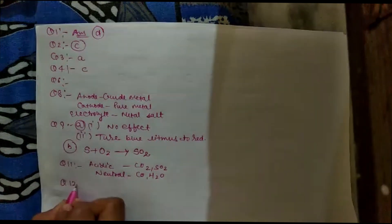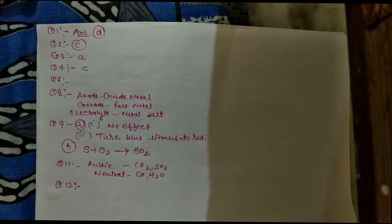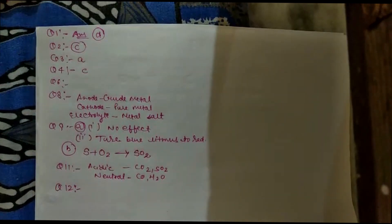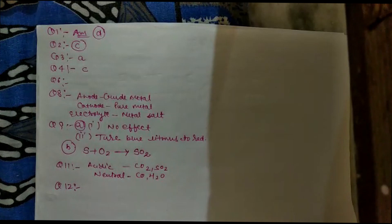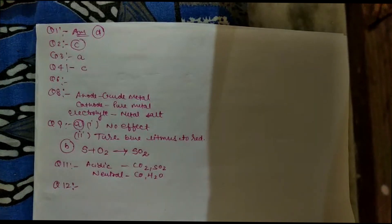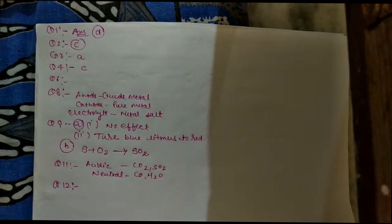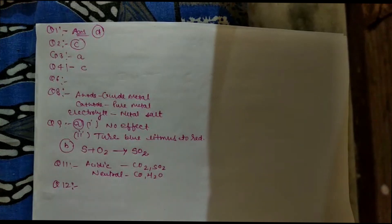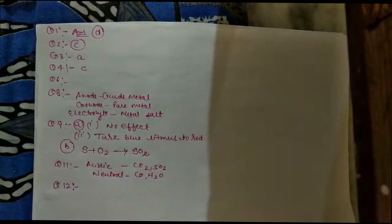Question 12 is important from exam point of view. Part A: platinum, gold, and silver are used to make jewelry. What is the reason? Platinum, gold, and silver are least reactive metals and they are very shiny, so we use them for jewelry purposes.